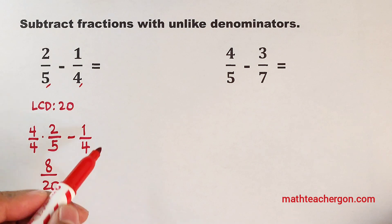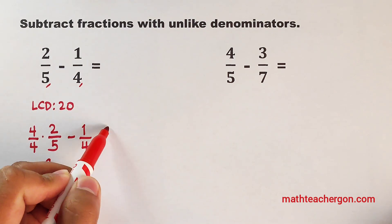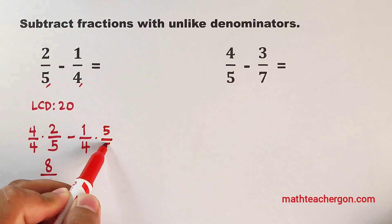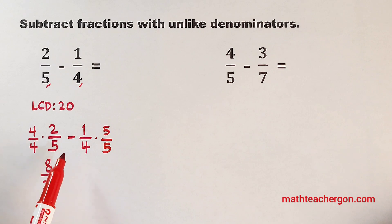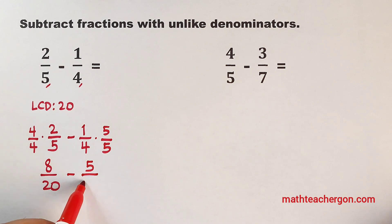We will multiply it by 5. So this must be multiplied by 5 over 5. Now, 1 times 5 is simply 5 over 4 times 5, which is equal to 20. Since the denominators are the same, it is much easier for us to subtract fractions.